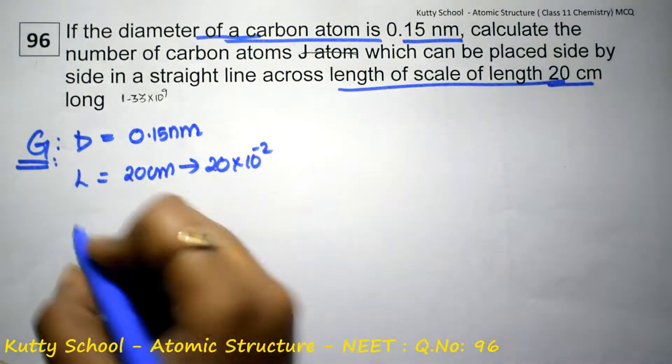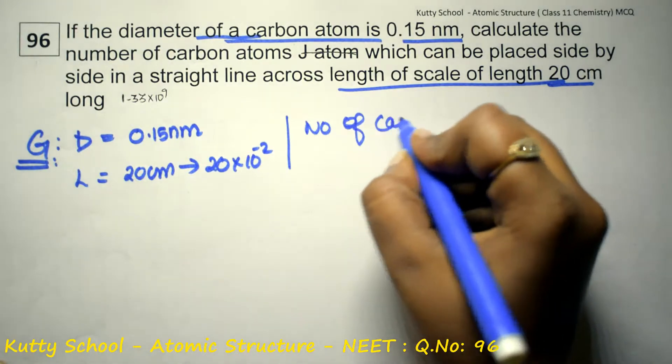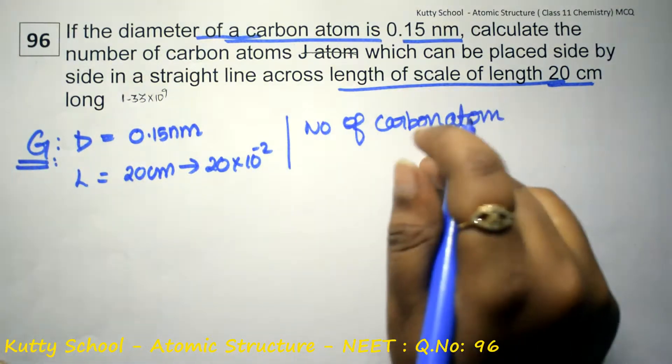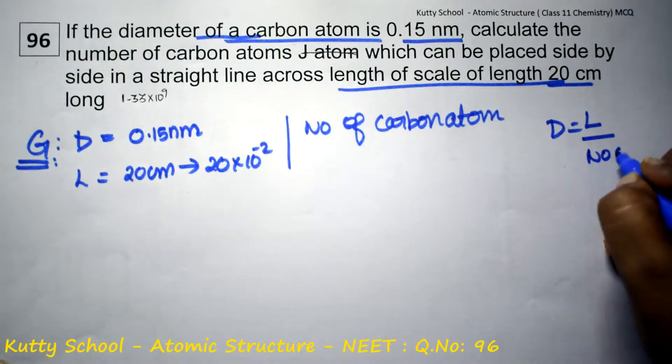Next, number of carbon atoms. So diameter, number of carbon atoms, length is equal to length by number of carbon atoms.